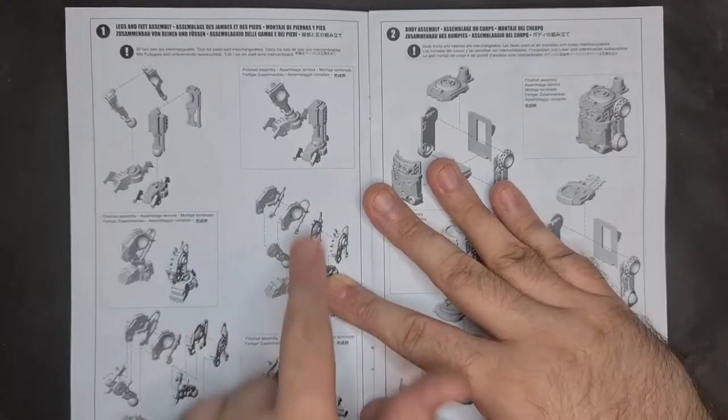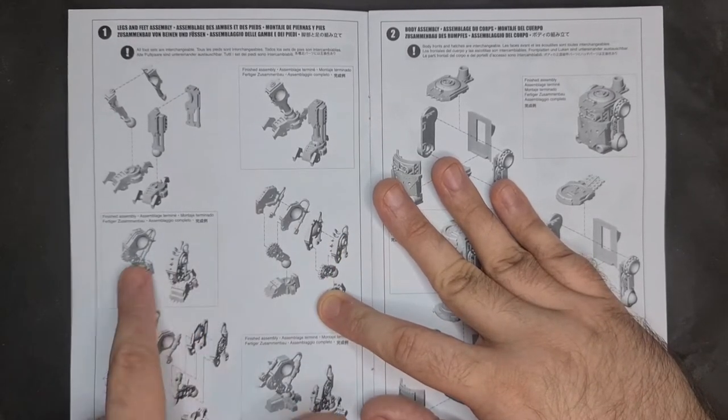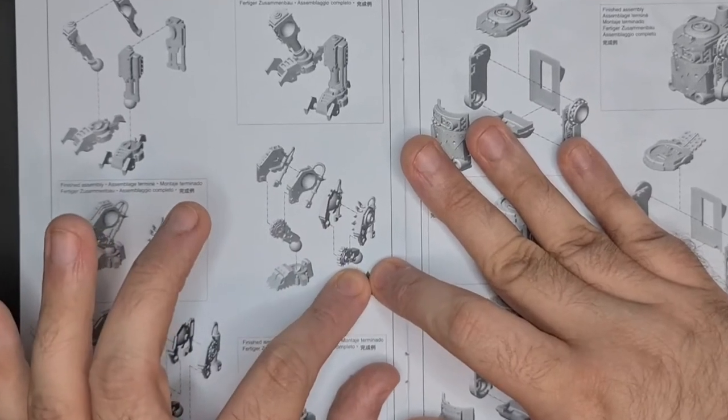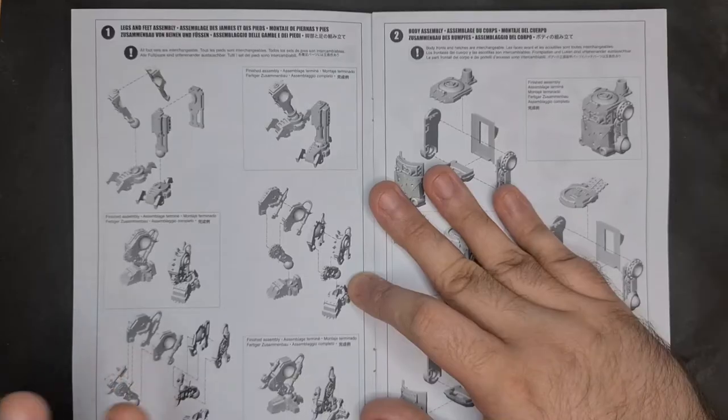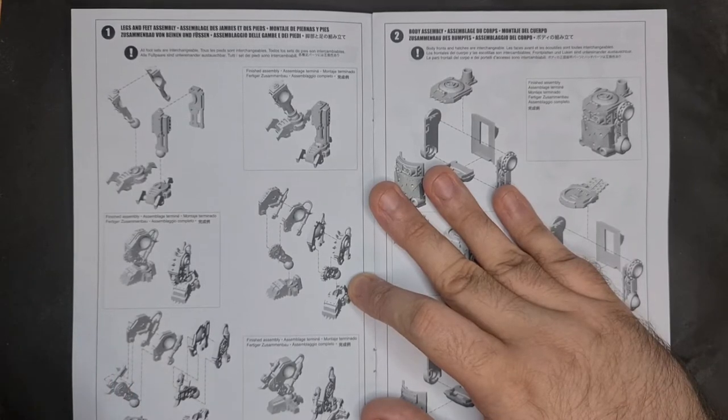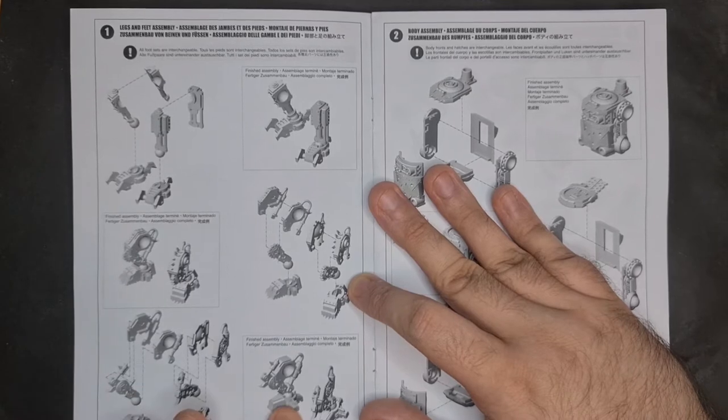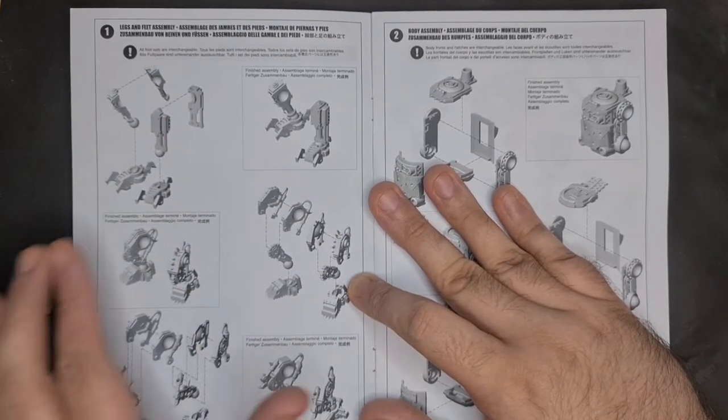You have this symbol here. All foot sets are interchangeable, finished assembly in these little boxes here. So you can see, here's another finished assembly, another build guide for this one here. So you put these two pieces together and you put this cog piece into the leg here and then into the feet again. Just take your time and make sure you're following the guide. Some are a little bit more complicated than others. The finished assembly again, it's nice that you get a bit of variation in the designs of the feet and legs.